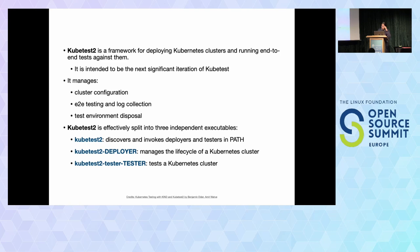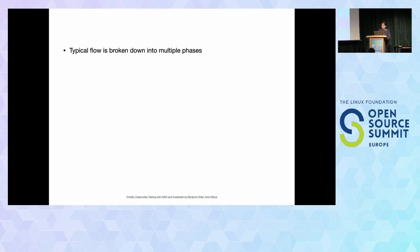So what exactly is a deployer and what is a tester? The kubetest2 deployer is responsible for the test cluster lifecycle — that is, deployment of the test cluster all through its decommission, locally or on different cloud providers. The kubetest2 tester is responsible for running end-to-end tests against those clusters deployed by deployers. A typical workflow is broken down into multiple phases: build, up, test, and down. Build is optional and compiles Kubernetes artifacts from source code. Up builds the test cluster, test runs the test suites against it, and down decommissions the cluster once the test flow is done.